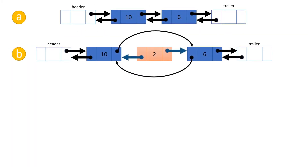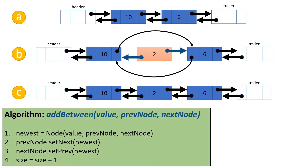You're never going to add a node before the header sentinel node, and you're never going to add one after the trailer sentinel node. They're there so we can simplify the code to always add a node in between other nodes. So let's talk about inserting a node in a doubly-linked list. In link list A, we just have a doubly-linked list with two nodes — one holding a value of 10 and one holding a value of 6. In link list B, we're trying to insert a node in between those two nodes. We'll name the method addBetween, and we pass in the value we want to store along with two nodes: the one before the insertion and the one after.